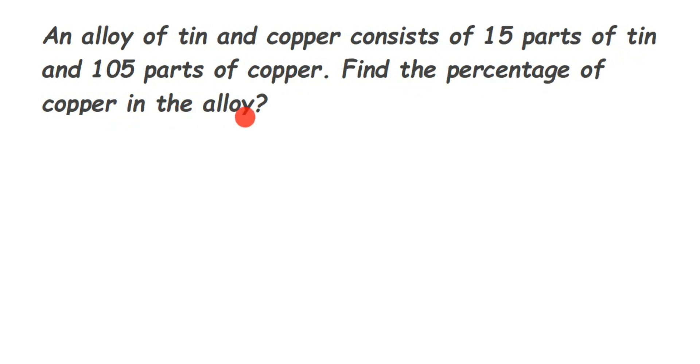Now what is alloy? Alloy is nothing but mixture of two different metals or more than that. So here there is a metal, tin and copper, and the part of tin is 15 and part of copper is 105. They are asking what percentage of copper is present in this alloy.